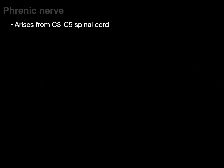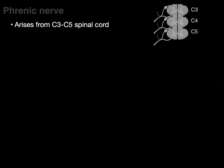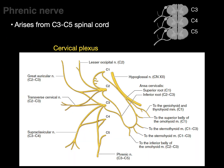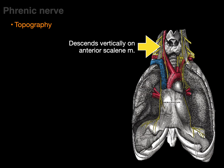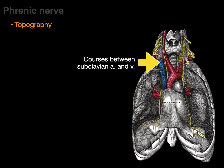The phrenic nerve arises from the C3, C4, C5 spinal cord levels. The ventral rami give rise to the C3, C4, and C5 components of the cervical plexus, but they form the unique phrenic nerve. The phrenic nerve descends vertically on the anterior surface of the anterior scalene muscle, then courses between the subclavian artery and vein at the root of the neck.